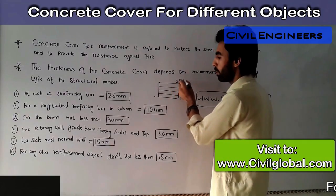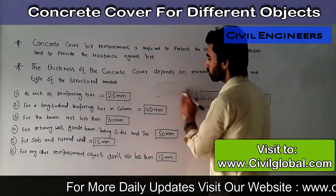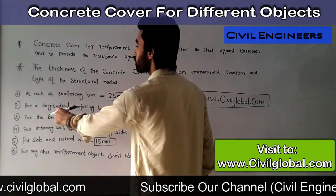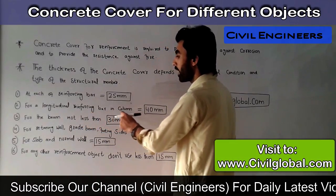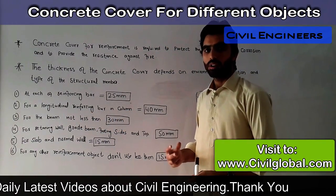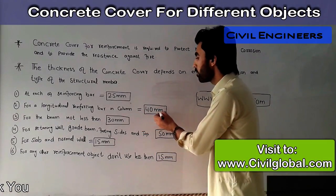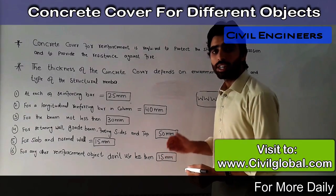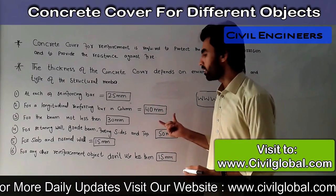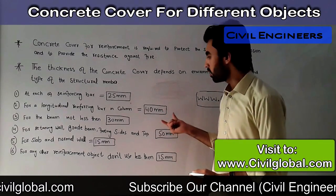The second one is for a longitudinal reinforcing bar in a column. How much concrete cover is required for a column? You must take at least 40 millimeters. Do not take less than 40 millimeters. You can go more than 40 millimeters, but never less than 40 millimeters.